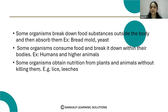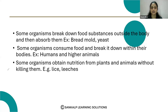The third type: some organisms obtain nutrition from plants and animals without killing them — they just absorb the nutrients from the organism. For example, leeches. So these are the three types of heterotrophs.